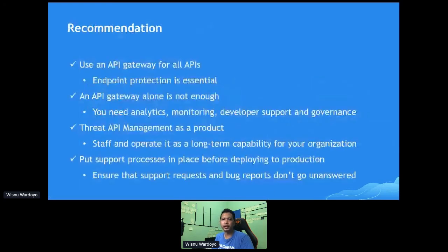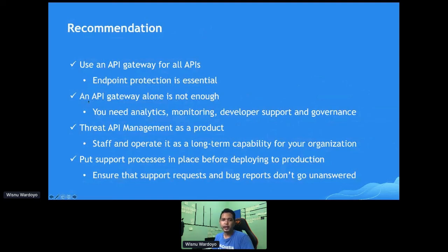To wrap up this session, here are the recommendations. First, use an API gateway for all APIs — endpoint protection is essential. Rate limiting and authentication/authorization are very essential for your API. An API gateway alone is not enough; you also need analytics, monitoring, developer support, and governance. Second, treat your API management as a product — staff and operate it as a long-term capability for your organization, because it will benefit you in the next two, three, or five years.